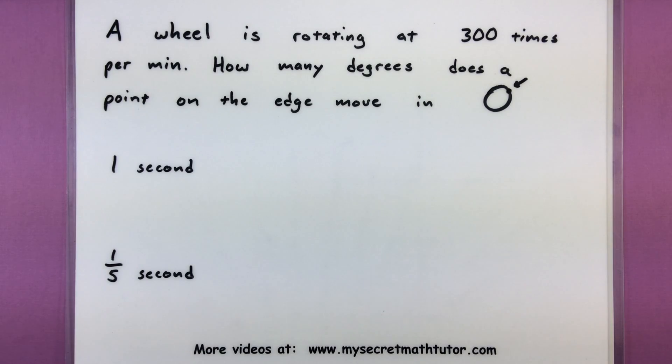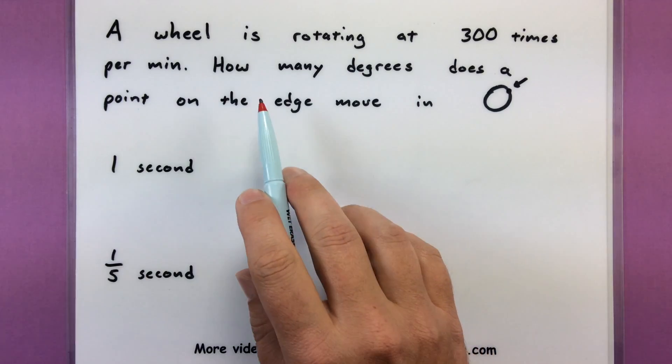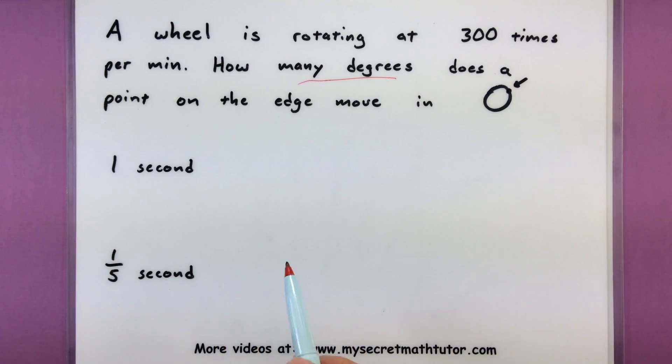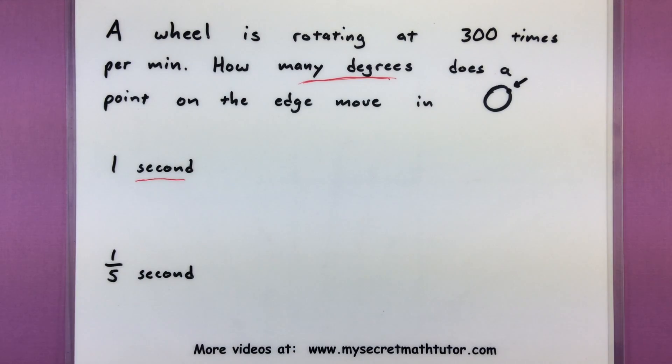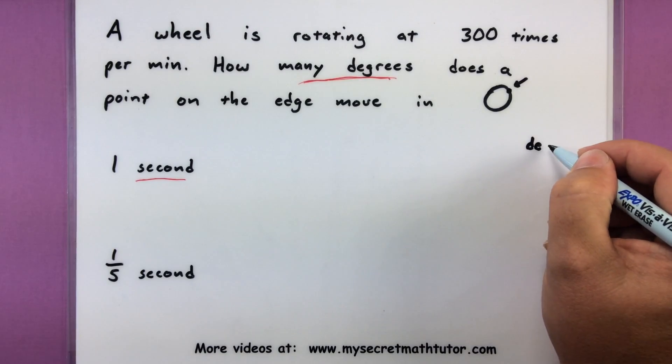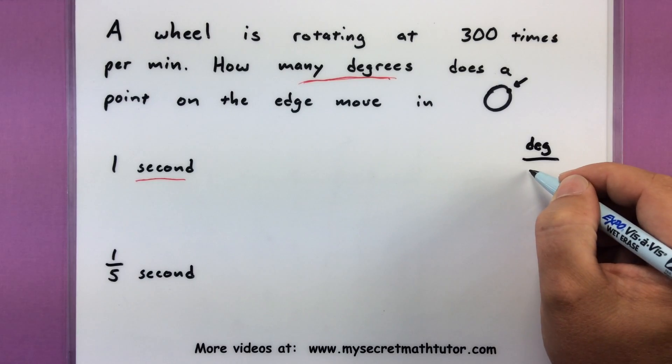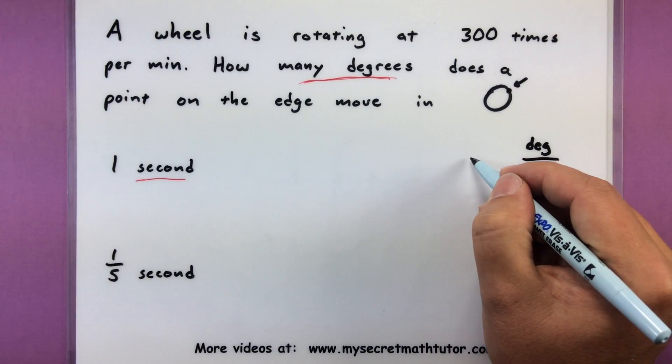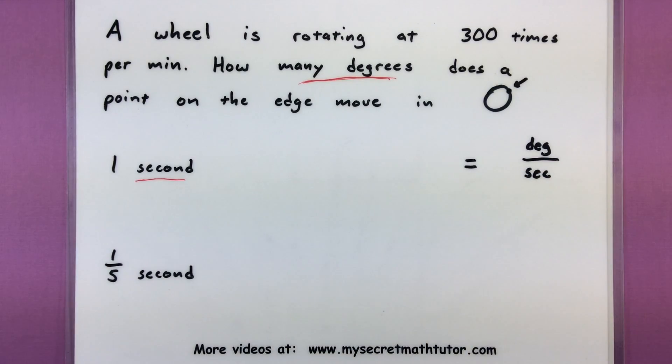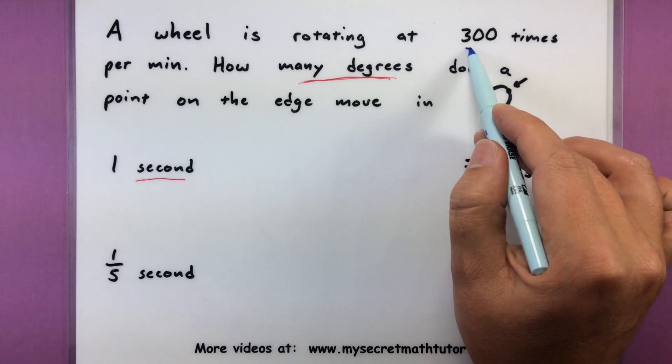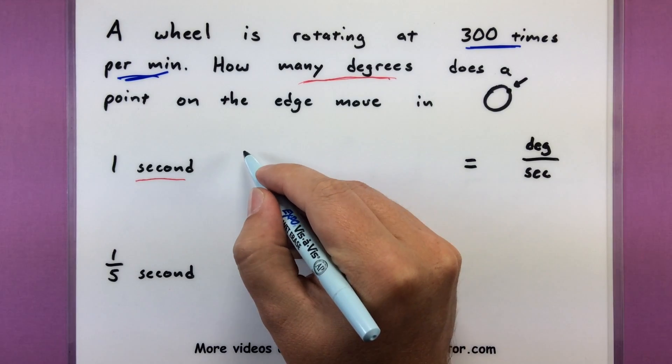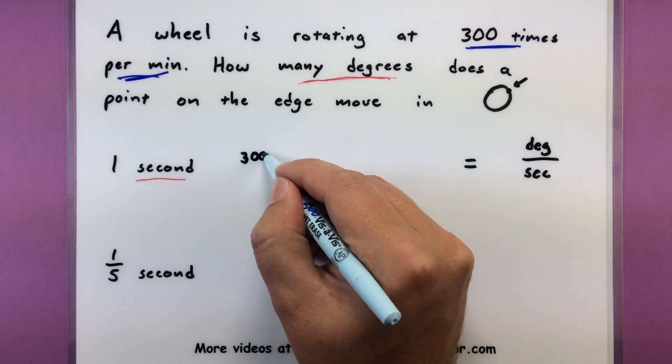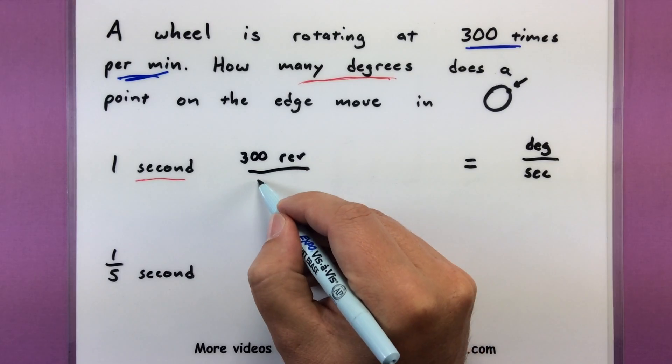In a problem like this, you really want to identify what you're after. So for this one, we're after how many degrees does an individual point move in one second? So this is what we want to see in our answer. We want to see how many degrees per second it's going to move. Since I know that information, I'm going to put this all the way at the right and say that I really want degrees per second as my final answer. Then I'm going to go back through the problem and see what information I've been given to try and build this. So it looks like I have that a wheel is rotating 300 times per minute. Let's go ahead and put that over on the left side. Right now we know it is currently spinning. I have 300 revolutions per one minute.